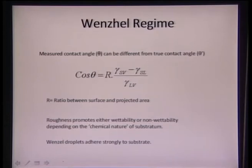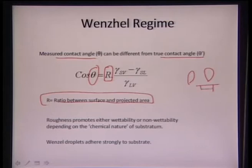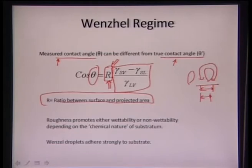There is one more aspect: the true contact angle and the measured contact angle can be different. The measured contact angle is also affected by a term called roughness — the ratio between the actual surface area and the projected area. If a surface has much higher surface area than its projected area, there is an effect of roughness given by the term R. Roughness can promote either wettability or non-wettability, depending on the original surface chemistry.